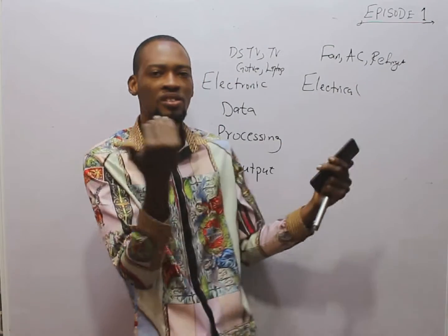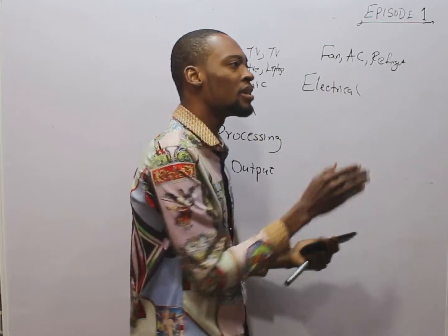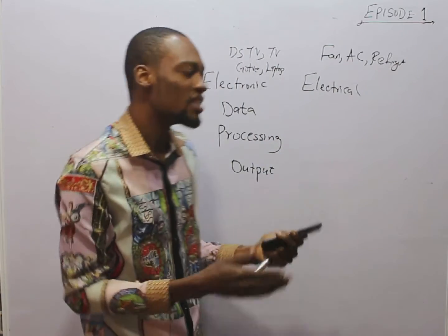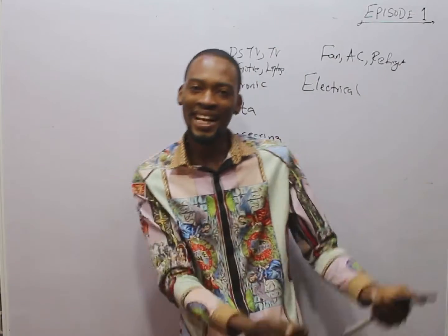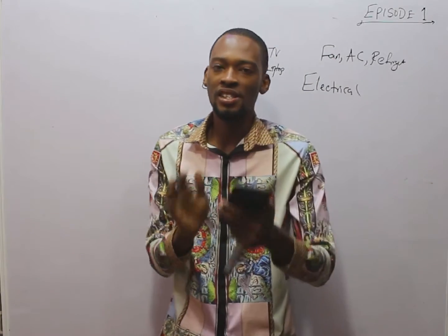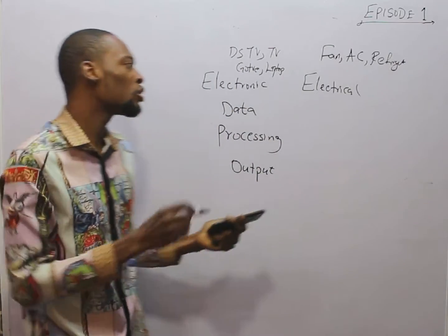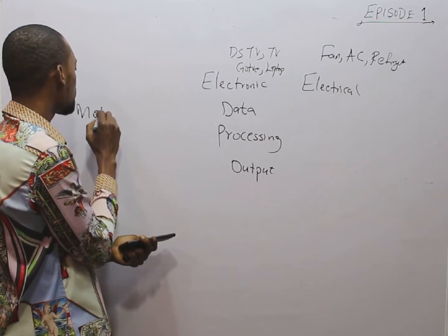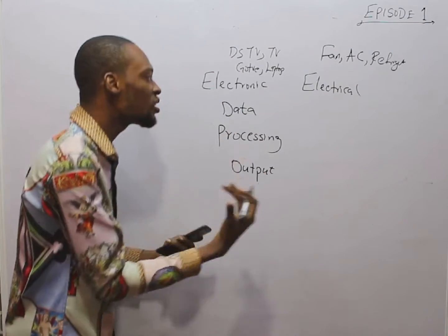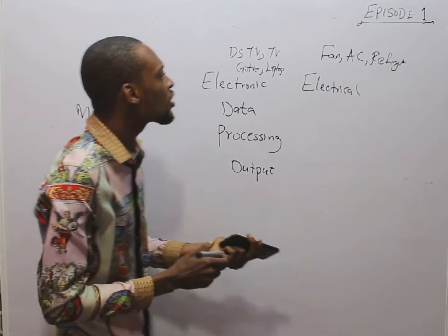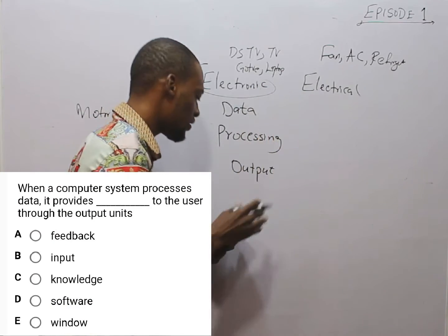A generator converts mechanical energy to electrical energy, while a motor is the opposite of a generator — it converts electrical energy to mechanical energy. So, a computer is in the electronic devices category.